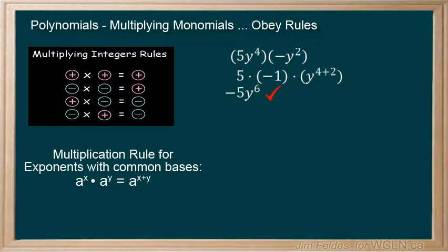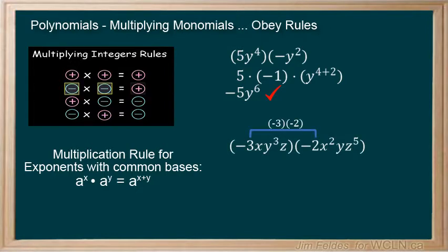Two slightly more complex monomials can be tackled in a similar way. Negative 3 times negative 2 gives us positive 6. x to the first power times x squared is x to the 1 plus 2 or x cubed. And 3 plus 1 gives us y to the fourth, and we have z to the sixth power.